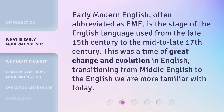Early Modern English, often abbreviated as EME, is the stage of the English language used from the late 15th century to the mid to late 17th century. This was a time of great change and evolution in English, transitioning from Middle English to the English we are more familiar with today.